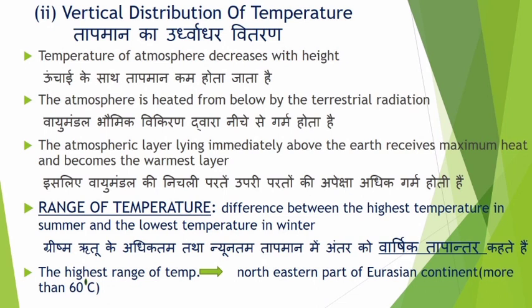Because this area is the farthest interior part of the Eurasian landmass, you can get a very large variation in temperature. In contrast, the lowest annual range of temperature is only about 3 degrees Celsius, found between 20 degrees south and 15 degrees north. This is because these latitudes are on both sides of the equator, where the sun rays are almost vertical throughout the year, so there is very little difference in temperature between January and July.